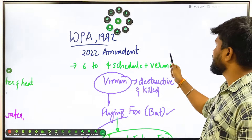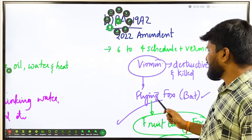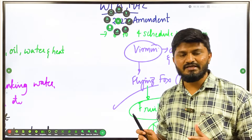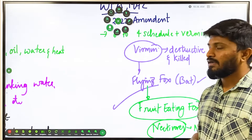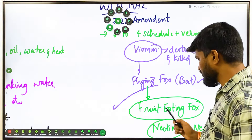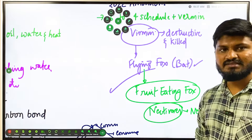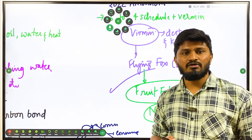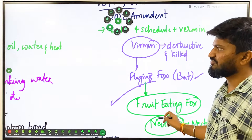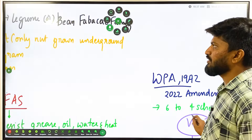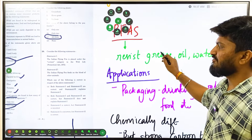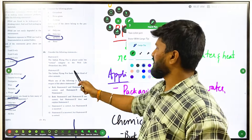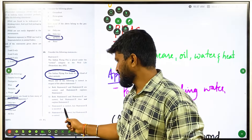Vermin is now a separate category outside the four schedules. The Indian flying fox is a large bat, also called a fruit-eating bat or fruit fox, which feeds on the nectar of fruits and plants. Since it destroys fruits and crops of farmers, it has been declared a vermin. So statement 1 is correct. Statement 2 says it feeds on blood — but since it is a fruit fox, it does not feed on blood. Statement 2 is wrong. The answer is: statement 1 is correct, statement 2 is incorrect.